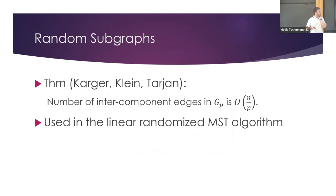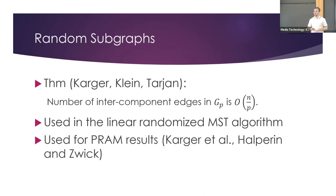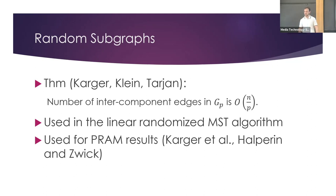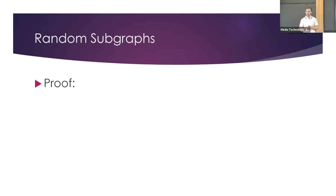This was one of the most major building blocks in the randomized linear-time MST (minimum spanning tree) algorithm. It was later also used for results in the PRAM model. As was noted, when Karger introduced this approach of sampling graphs to solve algorithmic problems, it blew everybody's mind — doing it far faster than anyone had before.